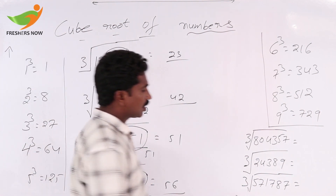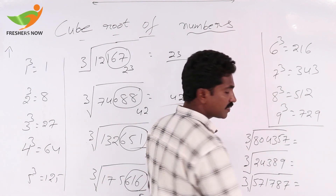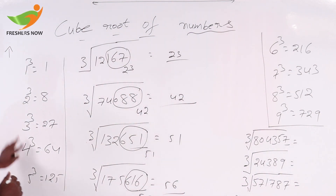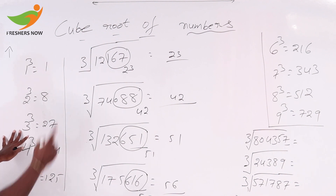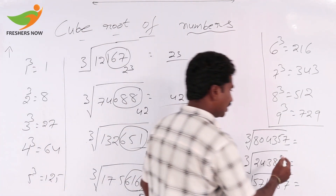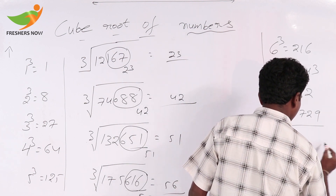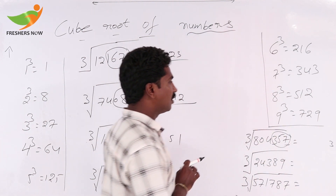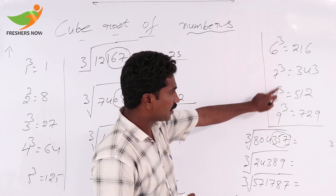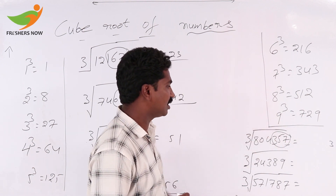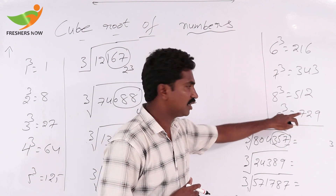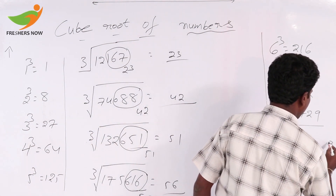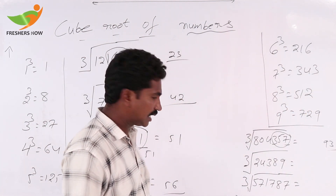Next, cube root of 804,357. Units place value is 7. 3 cube is 27, so units place value is 3. Keep and reduce away — 804 is there. 8 cube is 512, 9 cube is 729, 10 cube is 1000. 804's less-than value is 729. So we can take 9. That value is 93.